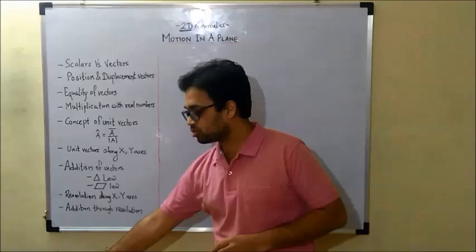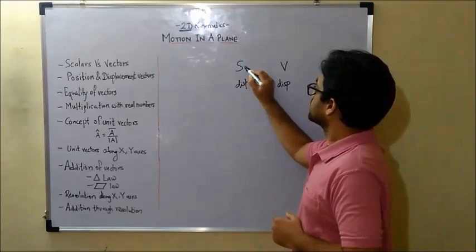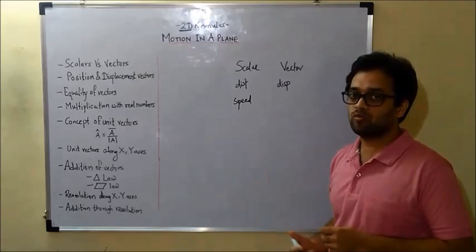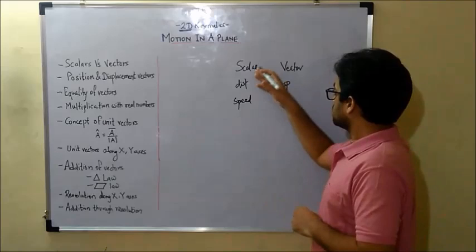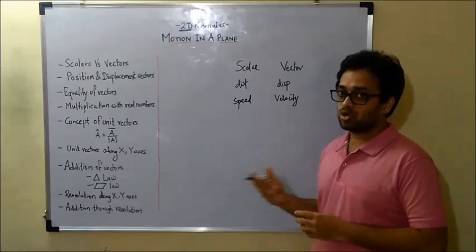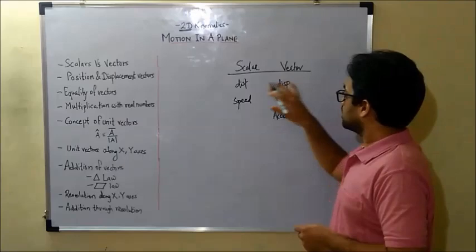So just try to recall which vectors we were already introduced to in the first chapter, that is 1D kinematics. Out of distance and displacement, displacement was a vector whereas distance was a scalar. Then we had speed, where I only talked about the magnitude of how fast you are moving but not the direction — so it's definitely a scalar quantity. Whereas velocity, where I always talked about the direction of motion, is a vector. Acceleration is again another vector. So those are five quantities of which two were scalars and three were vectors.